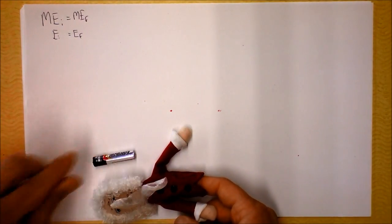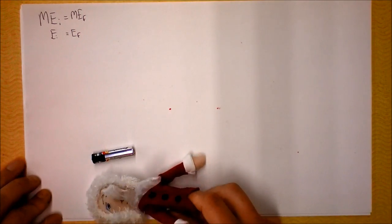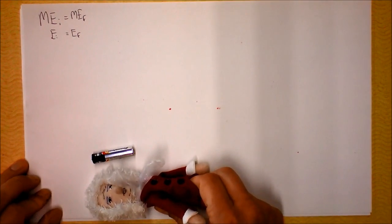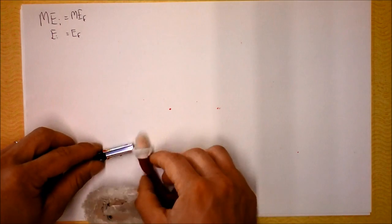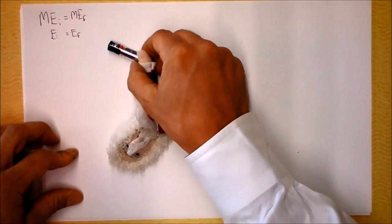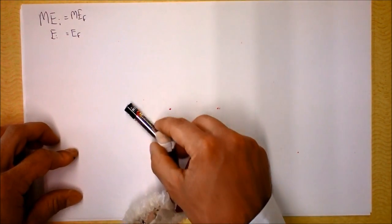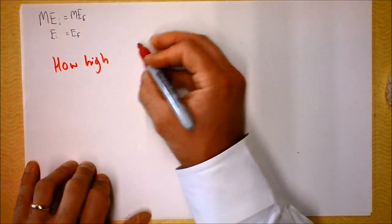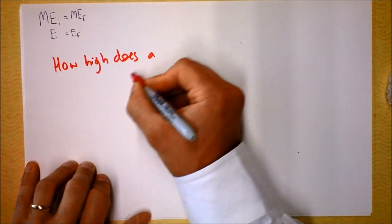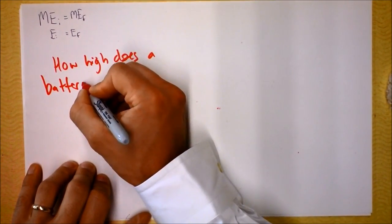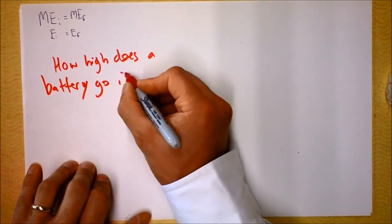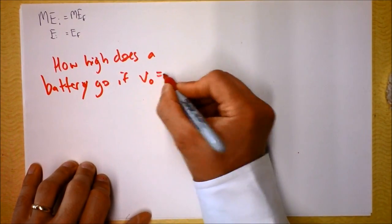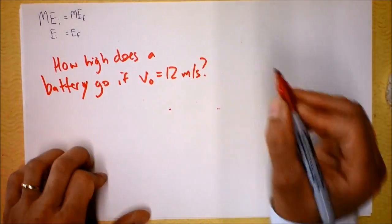So I want you to consider Newton and an enormous battery the size of his head. He throws up the battery, it goes up and it comes back down and it hits him in the head. I want to know how high does a battery go if V naught is 12 meters per second.